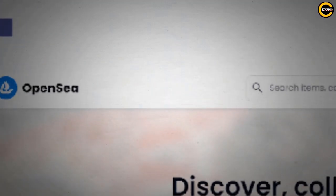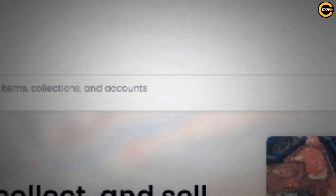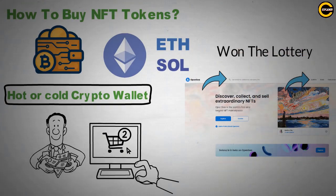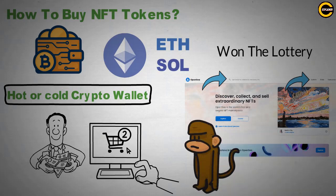You can search on the top row for a collection, or click on Explore to browse around and see what you like. Let's say you have won the lottery and can afford one of the highly valuable Bored Apes.